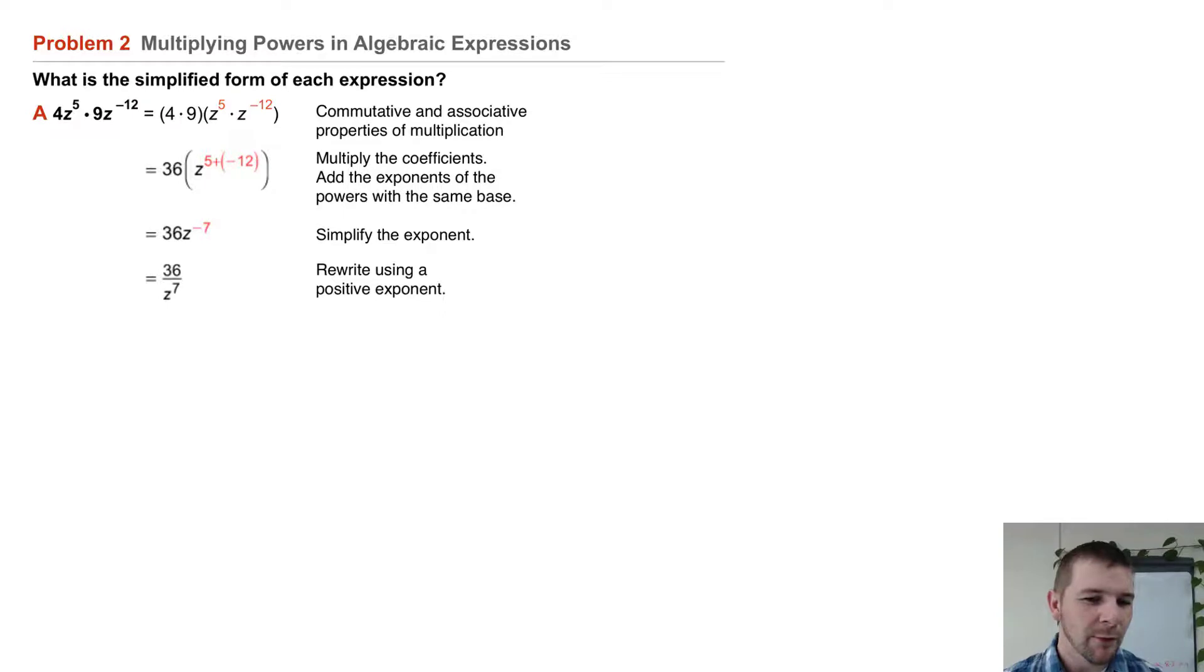Now as we know, we need to rewrite this using a positive exponent. So this is going to equal 36 over z to the seventh power.